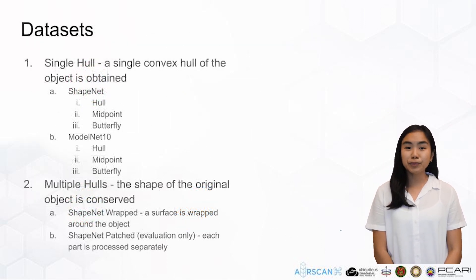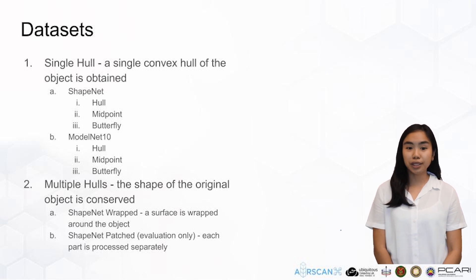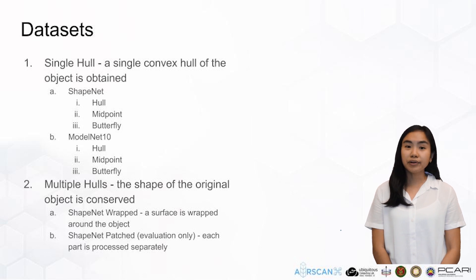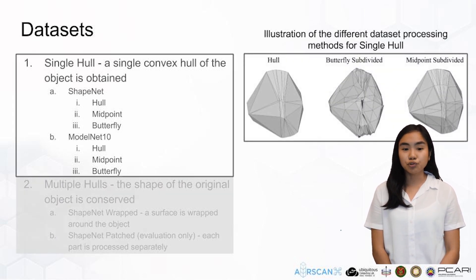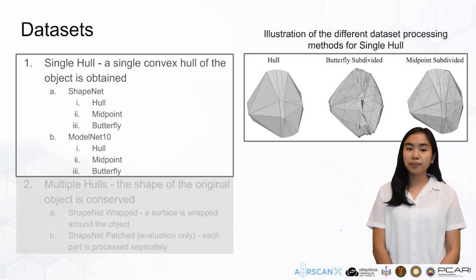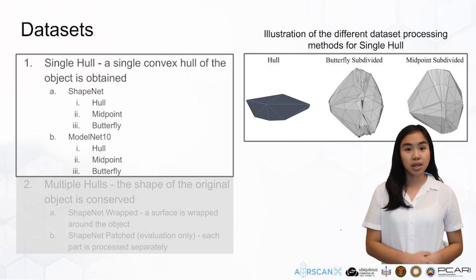In order to evaluate the performance of RAIN, ShapeNet and ModelNet 10 are used as benchmark datasets. All 10 classes from ModelNet 10 were used with the included train-test split. Meshes from the datasets were pre-processed to obtain the convex hull of the objects that will serve as the ground truth. Convex hulls remove ambiguities for internal planes or structures and result in watertight meshes. The first dataset configuration is the original convex hull of the meshes, or hull.